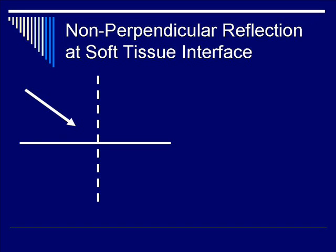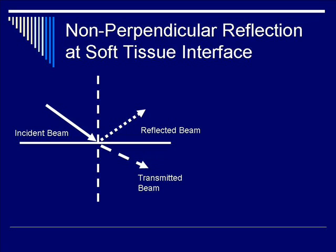Here we depict the ultrasound beam coming in at an angle and hitting the interface between two adjacent soft tissues. As you would expect, the incident beam breaks off into a reflected beam, depicted as a dotted arrow, bouncing off the interface at an angle of theta R, which is the same as the incident angle. Next, you see the transmitted beam, which is bent away from the incident beam.